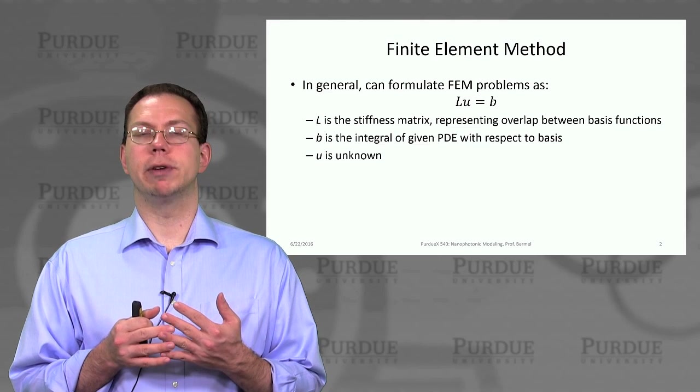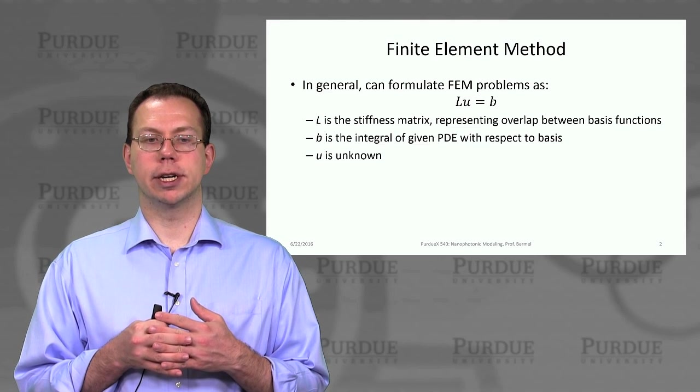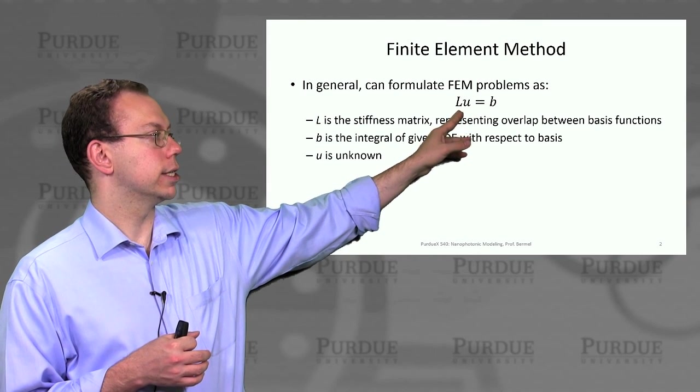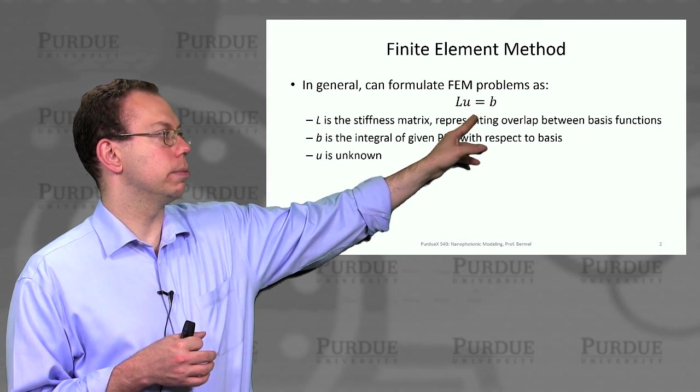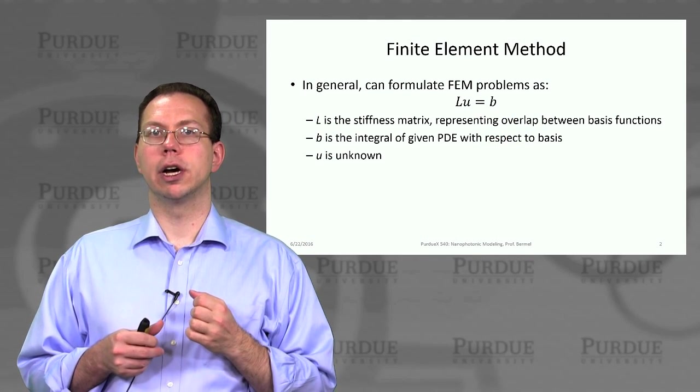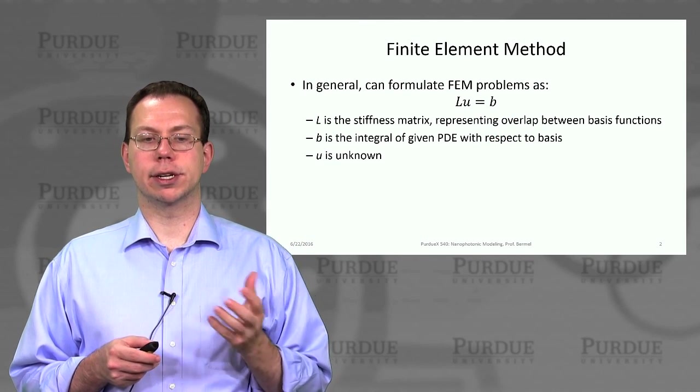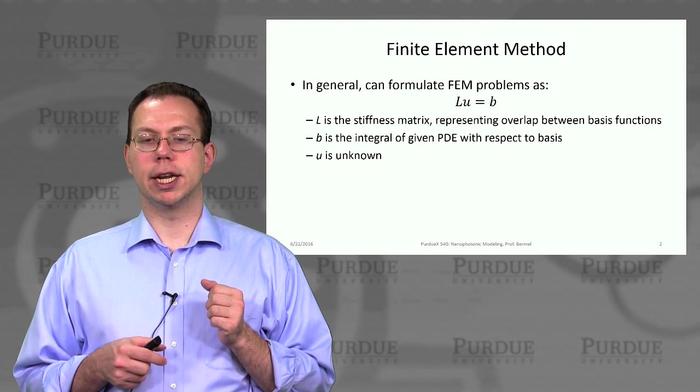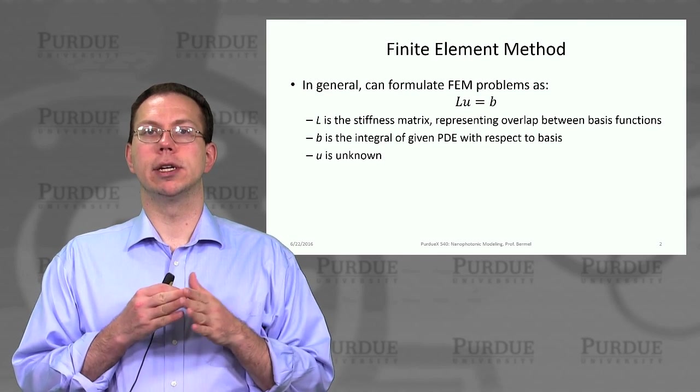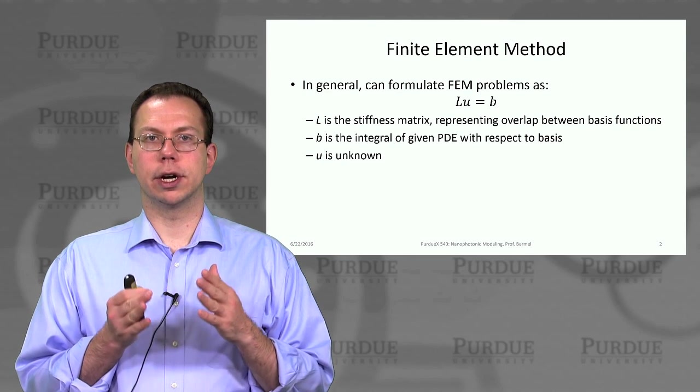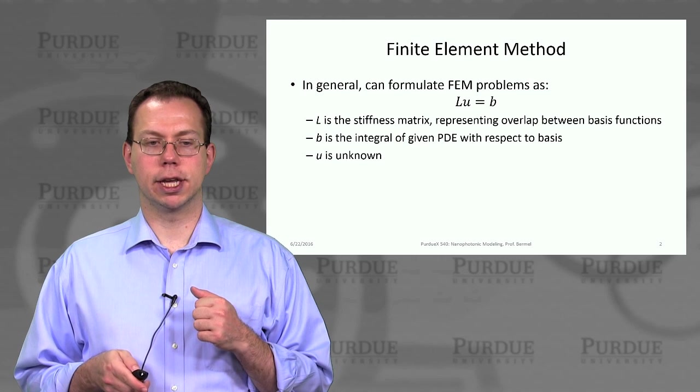So typically it would be written as a matrix algebra type problem in the form that LU, where L is the stiffness matrix times some unknown matrix is equal to B, where B is the integral of our PDE with respect to whatever basis we've chosen. And L is basically representing the overlap between basis functions from adjacent triangles or other finite elements that we're looking at.